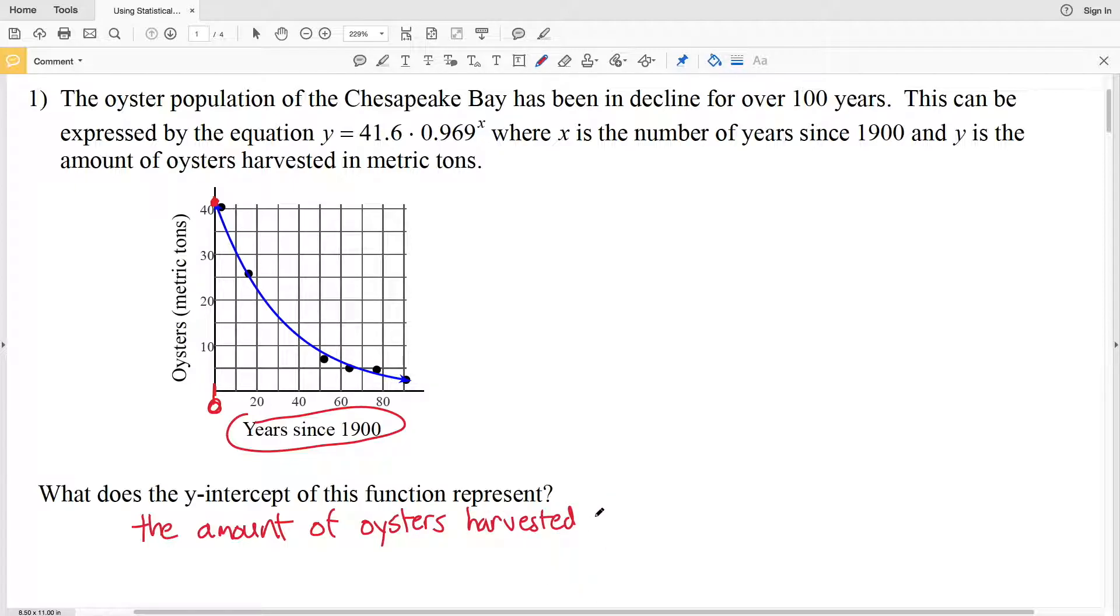The y-intercept represents the amount of oysters harvested in 1900 because that's zero years from 1900, and that y-intercept will give us the value in metric tons of the amount of oysters harvested.